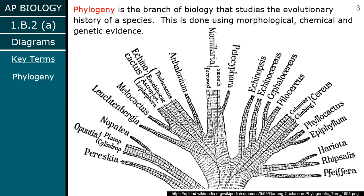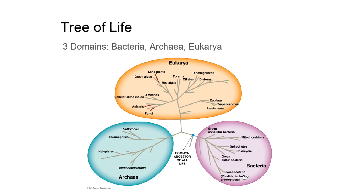Generally your best bet is to use DNA, but sometimes you don't have DNA — like if you're given a fossil, they don't generally contain DNA you can use. So generally you'll have to rely on morphological structures.